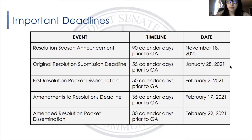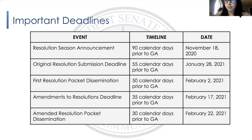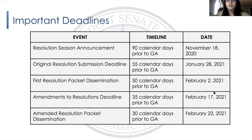We are going to send out the first packet on February 2nd. The deadline for amendments to resolutions is February 17th, and the final packet with all those amendments will be disseminated on February 22nd. It's important to keep these deadlines in mind because amendments are coming up very fast, and there are several steps to making amendments, so start planning early to make sure you turn them in by the February 17th deadline.